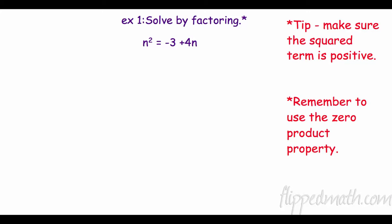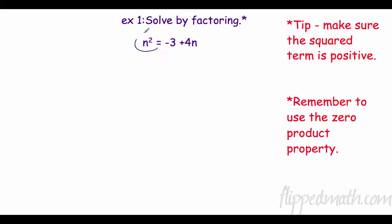So let's take a look. We are going to solve this equation by factoring. It gives us a little tip here: make sure the square term is positive. Our square term is this, and right now it is positive, so I'm not going to move it. I'm going to move everything to the same side and get this equal to zero, because we have to use the zero product property — all my stuff on one side, equal to zero.